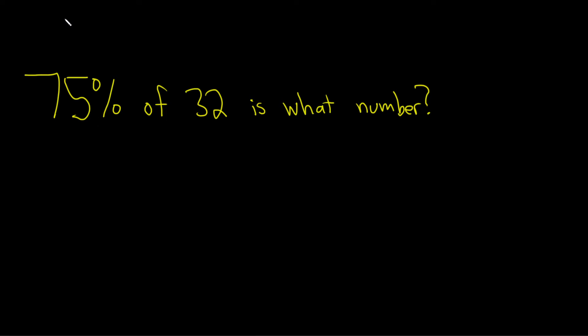So the first step is the 75%, you want to write that as a decimal. So you would take your 75 and move the decimal over two places. So 1, 2. So it's .75.